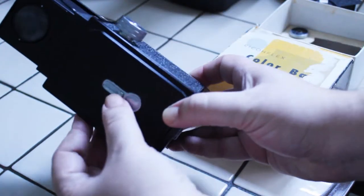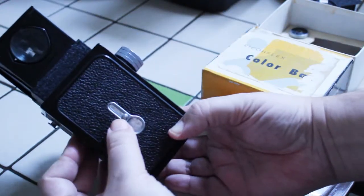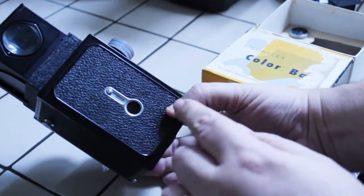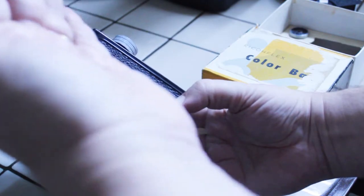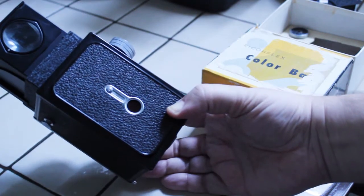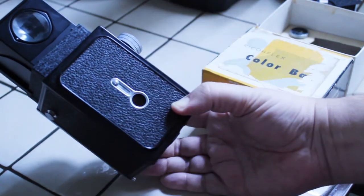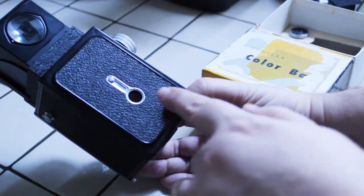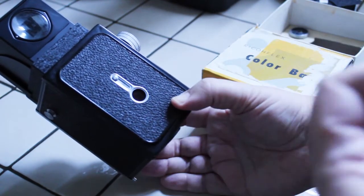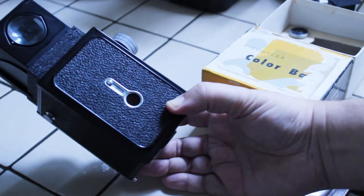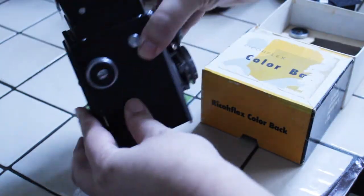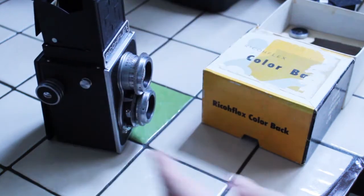And then I will take the film advance knob and move it forward until I see the next number on the film. And you can see there's a little window here. I open that up, and through that little red window I can see the back of the film. There was protective paper on the back of the spool of film, and as you would advance, you would see the numbers on the back of the film. So you would see you took shot number one, and then you would advance it until you saw the two to take shot number two.